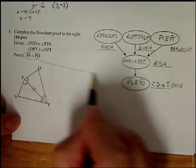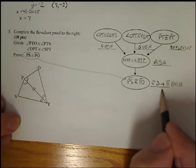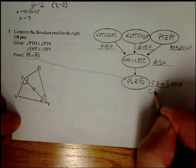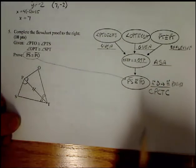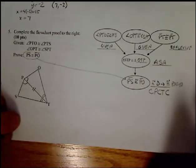Congruent triangles, therefore congruent parts. Or some of you would like to use CPCTC. So corresponding parts congruent triangles congruent. So that's our last step on that kind of a problem.